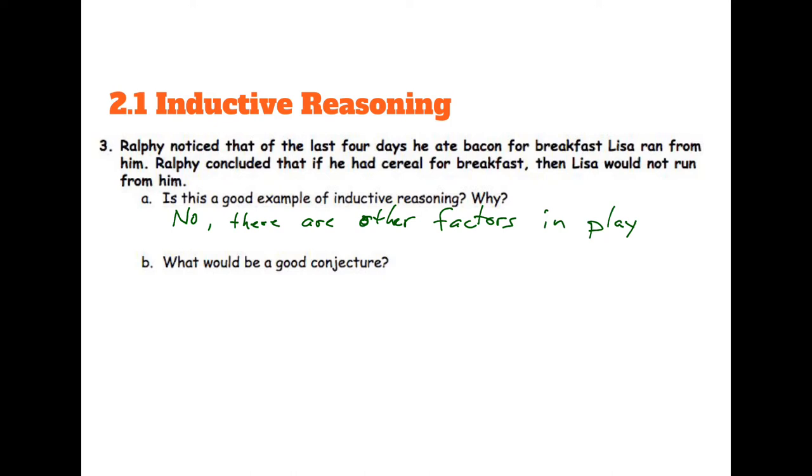So you can kind of go with the straightforward approach that if Ralphie eats bacon, then Lisa will run from him. Or you can go more and say when Ralphie doesn't eat bacon, Lisa won't run away from him, or some sort of conjecture there. Go ahead and write that down if you don't have one yet.